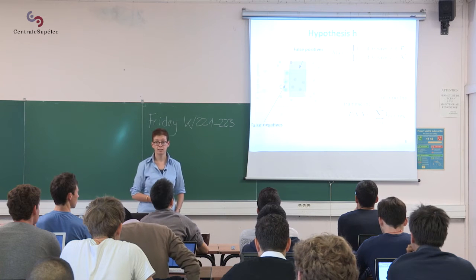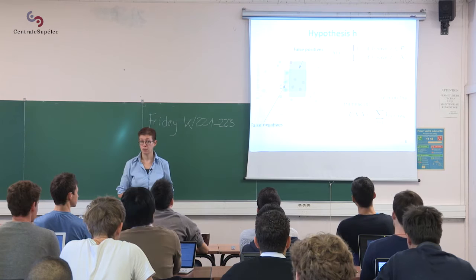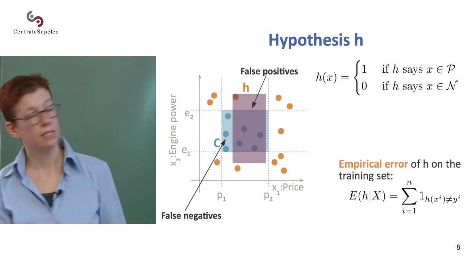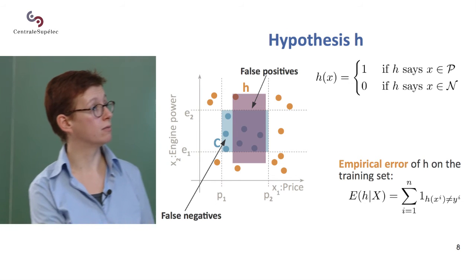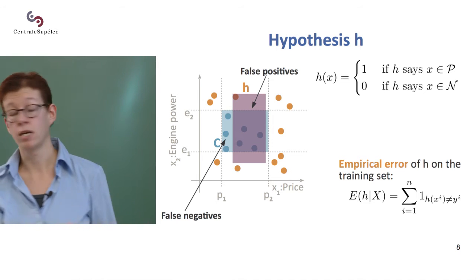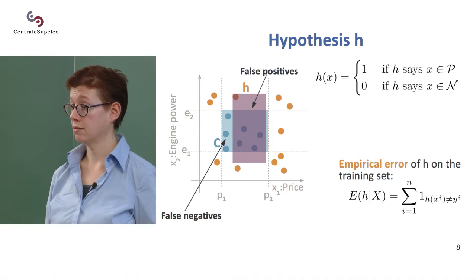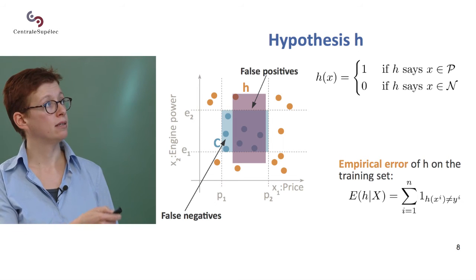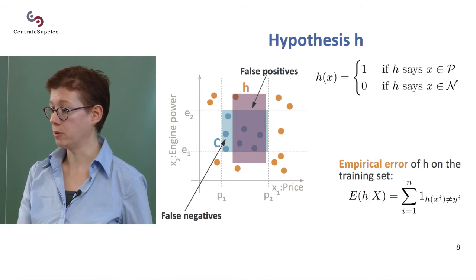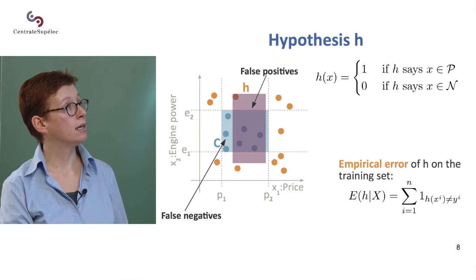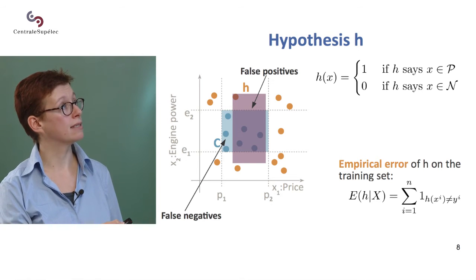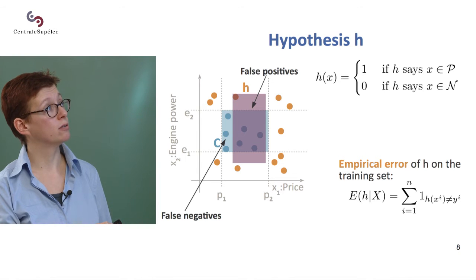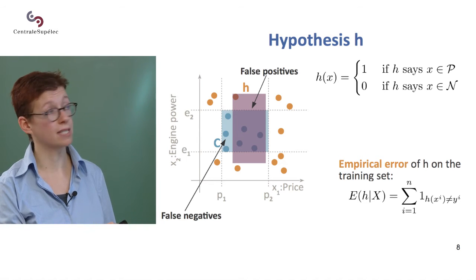How do we evaluate our model? If C is the true class and H (shown here in purple) is the class we've just defined — we've chosen a P1, P2, E1, and E2 based on some rule derived from the data — there's a slight overloading of notation where I'm calling H both this rectangle and the function that labels a new point. So if I put a point here, I'll label it as positive because it's within the rectangle, so H(X) equals one. If I put a new point here, I'll label it as negative because it's outside H.